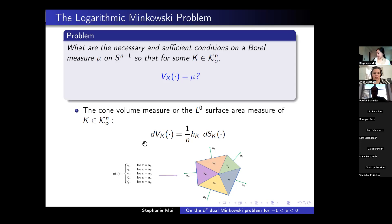The next Minkowski-type problem is the log Minkowski problem. This is a very famous and largely unsolved Minkowski problem. It asks what type of measures on the unit sphere can be the cone volume measure of some convex body. The cone volume measure is also known as the L0 surface area measure. In the discrete case, for a face with outer unit normal u_i, the cone volume measure at that normal is given by the cone volume at that face.